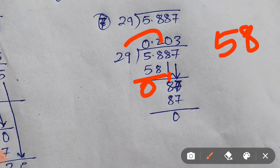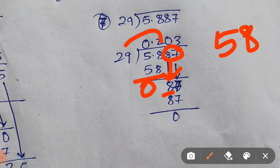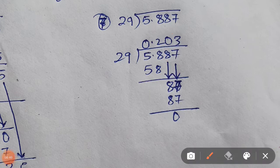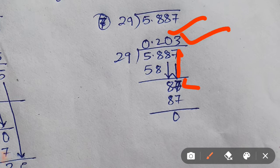Now bring the 8 down. 8 is again not divisible by 29. So as I told you, whenever you want to take two numbers together always put a 0 in the quotient. I have given one extra 0 here, therefore I am free to take 7 with 8, making 87. So 29 times 3 is 87. So the answer to this part is 0.